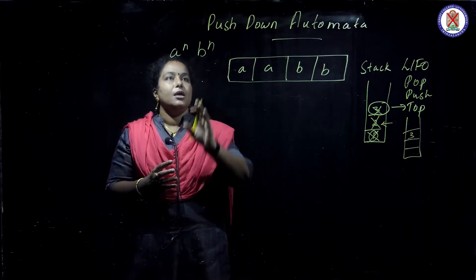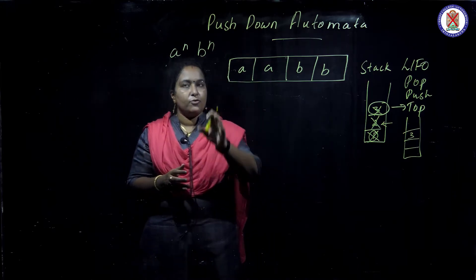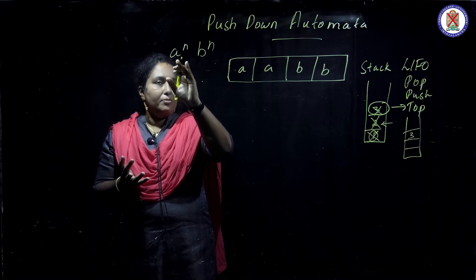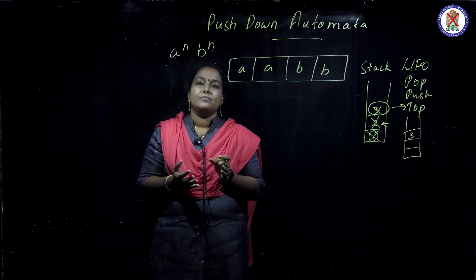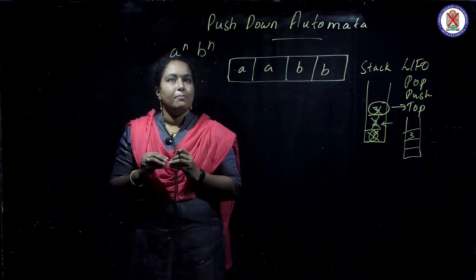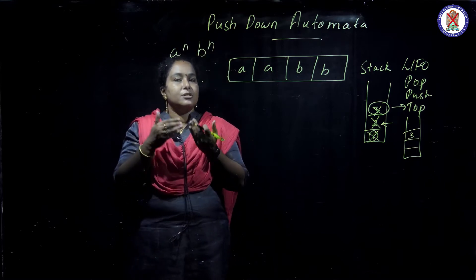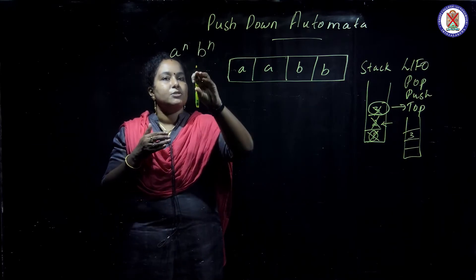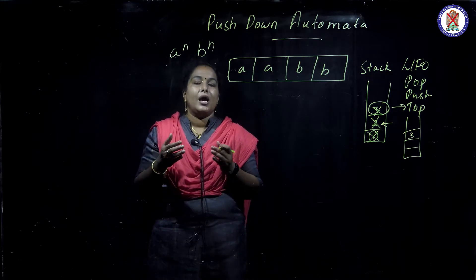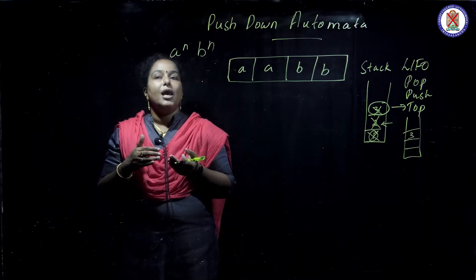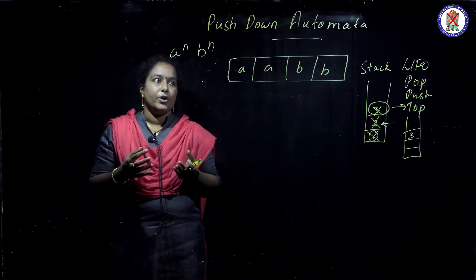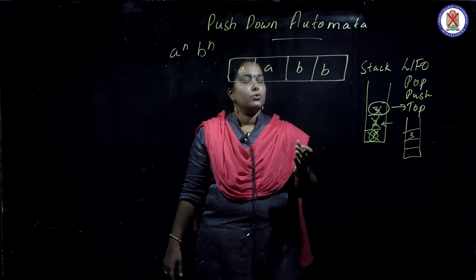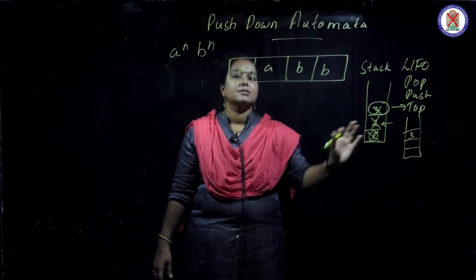I am designing a Push Down Automata for the language aⁿbⁿ. Can this be done by a DFA? No, because how many times 'a' is repeated, 'b' must also be repeated that many times, and DFA cannot do that matching. To match such items you need memory — how many times 'a' comes must be stored so you can match it with 'b'. DFA has no memory, so we move to Push Down Automata.